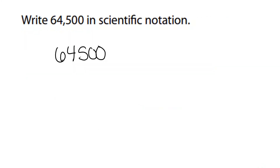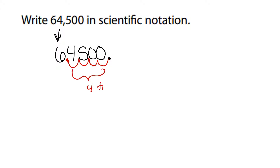We're going to write 64,500 in scientific notation. We take the decimal, which is here at the end, and move it behind the first number, which is a six. We move the decimal four times. When we write our answer, it's 6.45. Do not write the zeros — they are not important. Always write times 10, and then it's to the fourth power. It's positive because 64,500 is a large number, and we've moved the decimal four times.